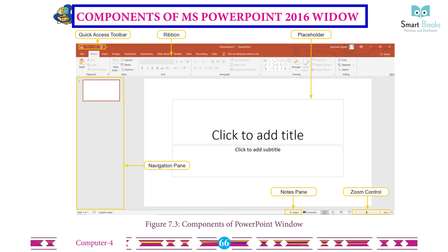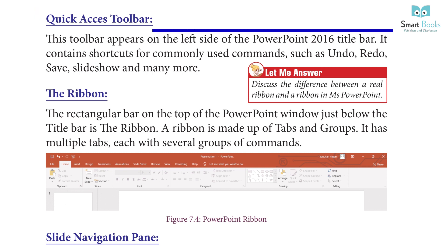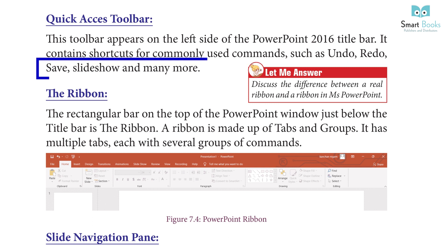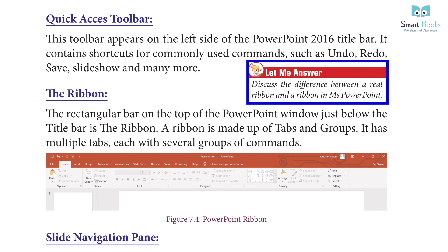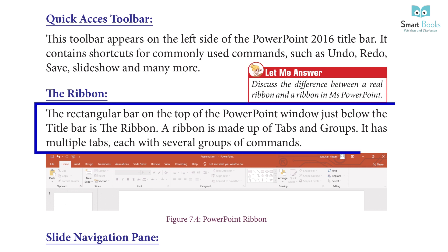Components of the MS PowerPoint 2016 window: Quick Access Toolbar — this toolbar appears on the left side of the PowerPoint 2016 title bar and contains shortcuts for commonly used commands such as undo, redo, save, slideshow, and many more. The Ribbon is a rectangular bar on the top of the PowerPoint window, just below the title bar.